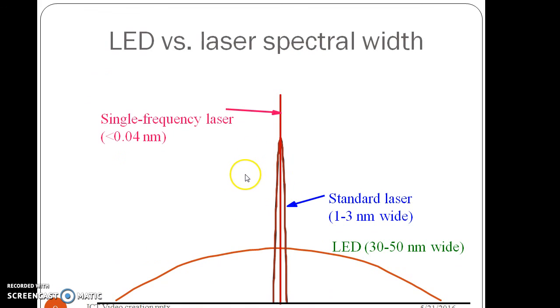Here we can compare LED and laser for its spectral width. The LED has a broader spectral width such as 30 to 50 nm wide, whereas a laser has a narrow spectral width which is in the range of 1 to 3 nm.